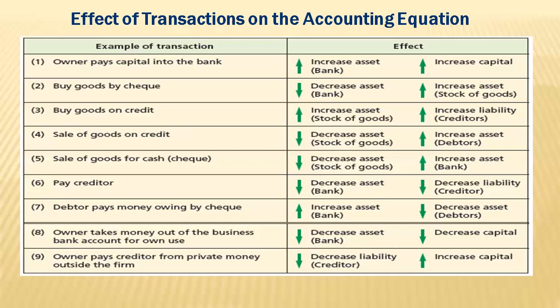Fifth: sale of goods for cash or check. They will pay by cash or check, so our asset accounts will increase — our bank or cash accounts will increase. Sixth: paid creditors. If we pay a creditor through bank or cash, our cash or bank accounts will reduce while our liability to the creditor will also reduce. We will have a credit on our bank account and a debit on our creditors accounts.